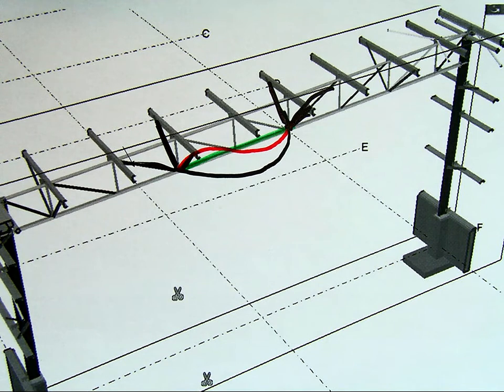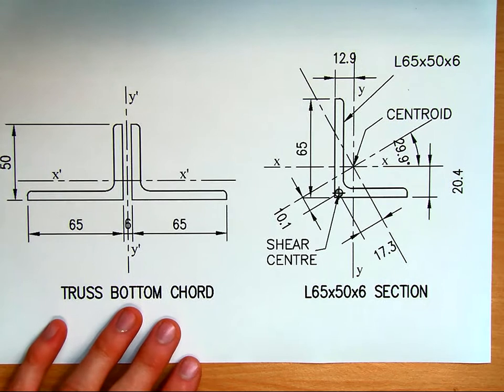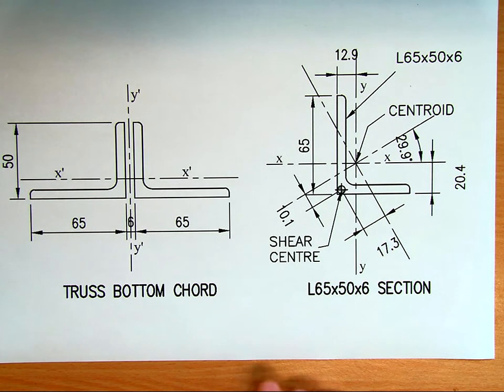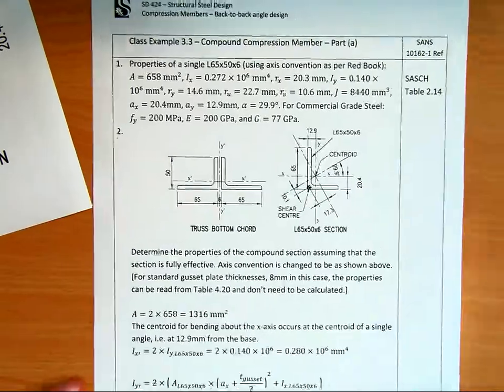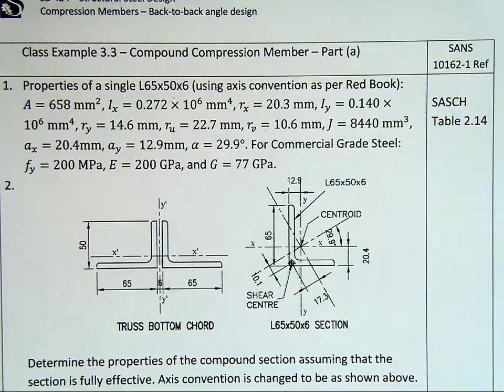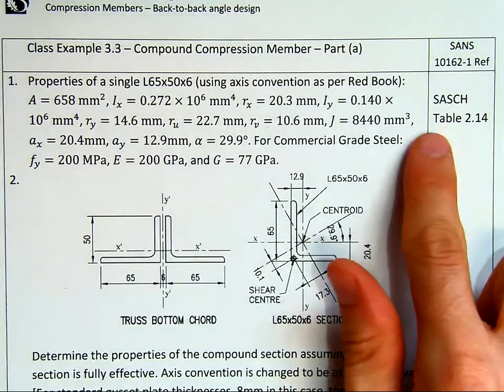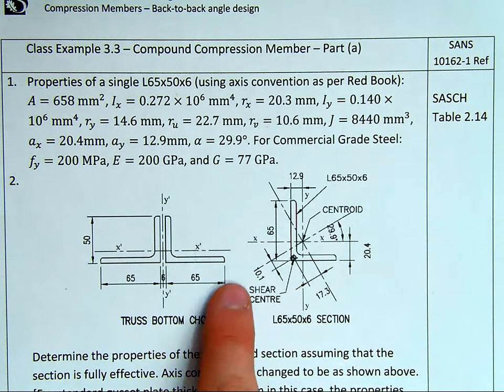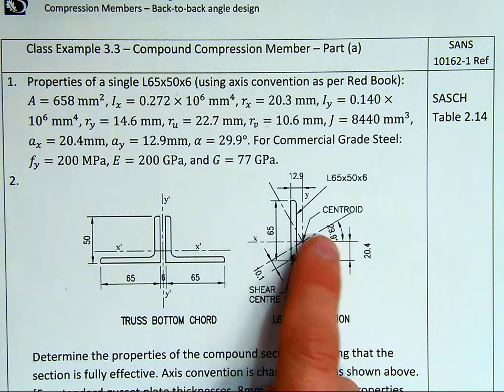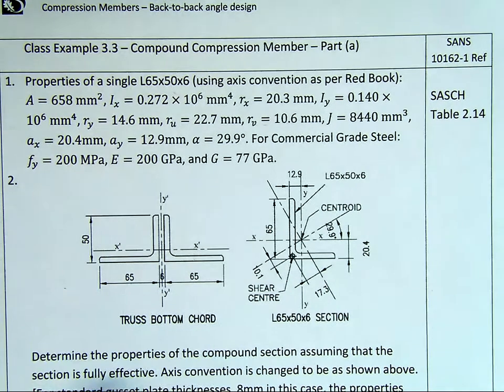Coming now to the equations, there's our double angle, just to remind you of the problem. We need to determine how it behaves as a section. I've listed all the properties of the member here from the red book, the South African Steel Construction Handbook, table 214, properties of a single angle 65 by 50 by 6. I've used firstly the axis in the red book convention, X and Y, for all those properties, for the area, IX, RX, etc.